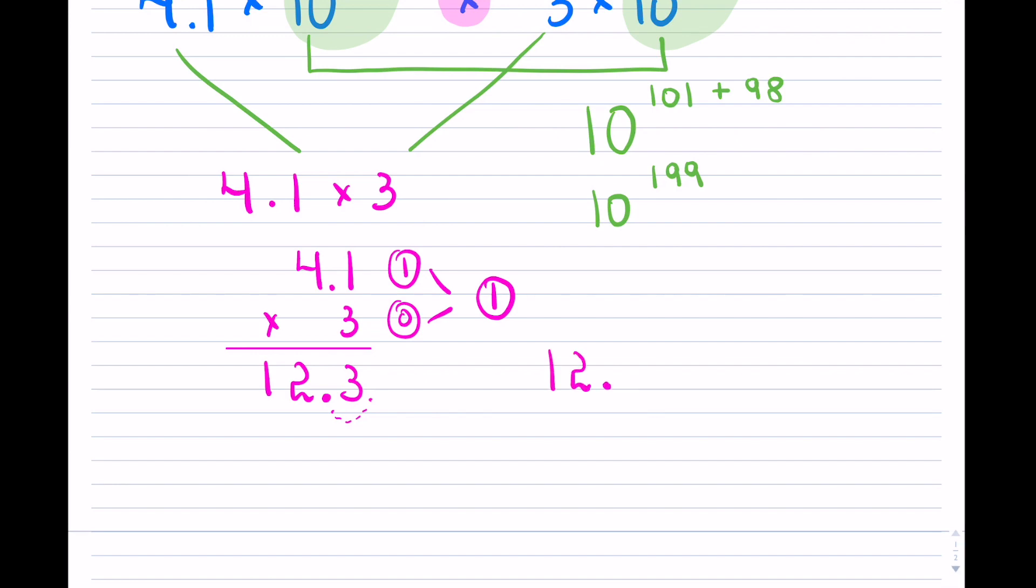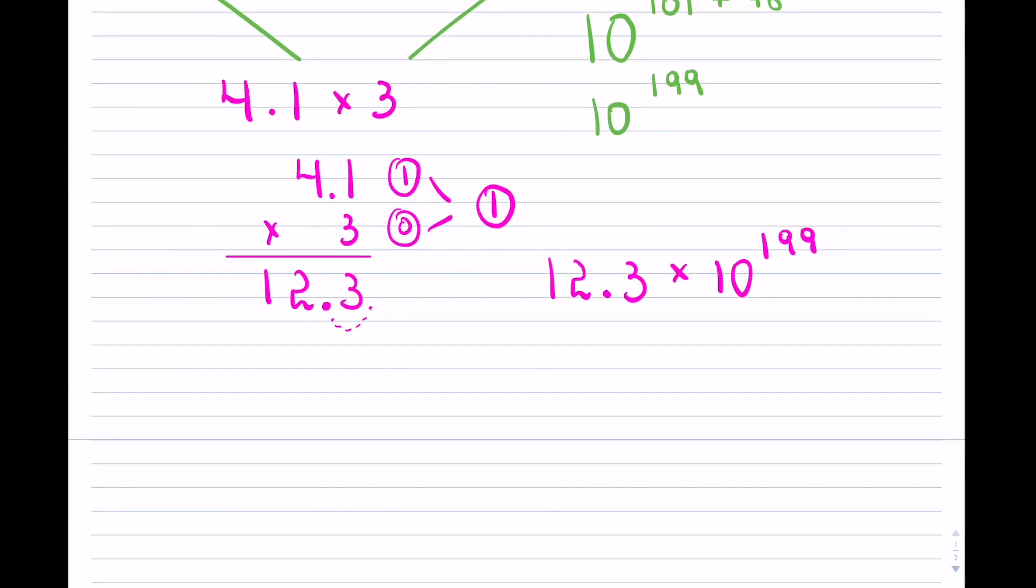And that brings me to the answer. Now, very often because we have one decimal place here, I'm going to shift this over the decimal. But what have I done? I've made this smaller by one, which means I'm going to have to make the exponent bigger by one. So you just do the opposite. So that's example one, now you are complete because your answer is in scientific notation.